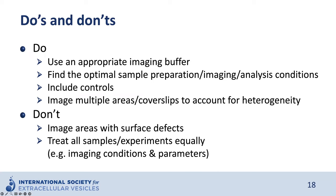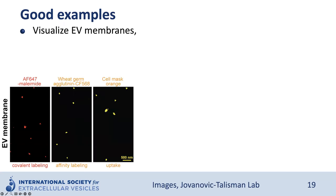When imaging EVs with SMLM, we should not image areas with surface defects and should not treat all samples or experiments equally — imaging conditions, parameters, and controls are distinct from experiment to experiment. Here are some examples of SMLM imaging of EVs: EV membranes can be covalently labeled with photoswitchable dyes, affinity-labeled with lectins conjugated to photoswitchable dyes, or labeled by uptake of membrane-staining molecules such as CellMask Orange. SMLM images of EVs are shown here.